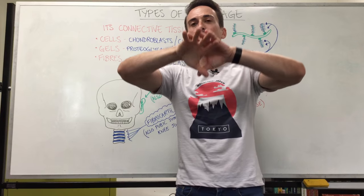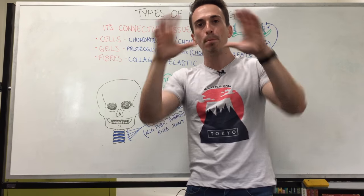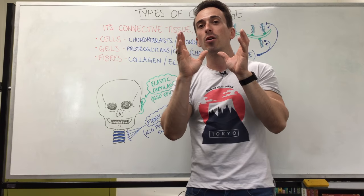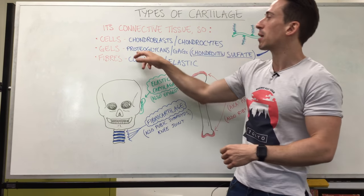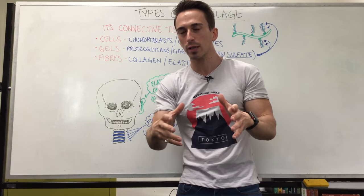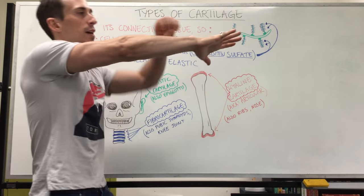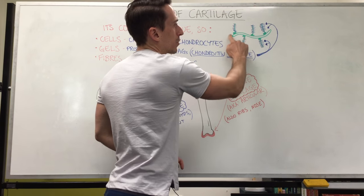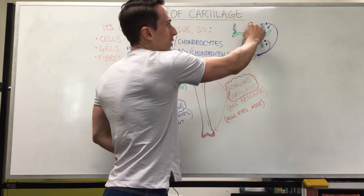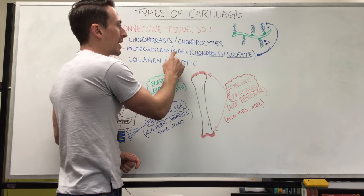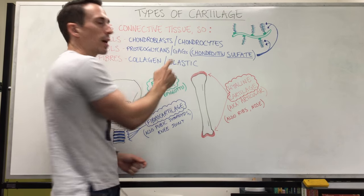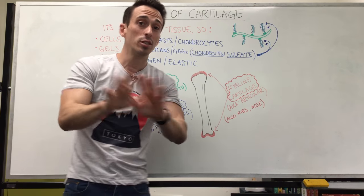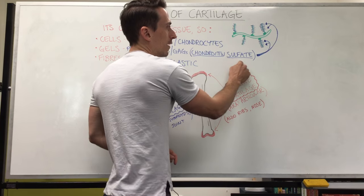Now for gels — the gels make up the predominant extracellular matrix of that particular tissue type. In this case it's a ground substance made up predominantly of proteoglycans, that's proteins and sugars. These proteoglycans have all these little things sticking off them, called GAGs — glycosaminoglycans — and the most predominant type of glycosaminoglycan, which is just a carbohydrate, is chondroitin sulfate.